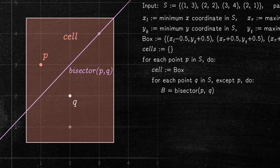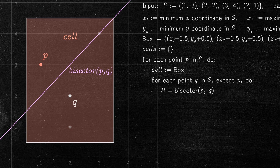Now, we find the intersections between this bisector and the cell. To do this, we break the cell down into line segments and then check for intersections between each line segment and the bisector.